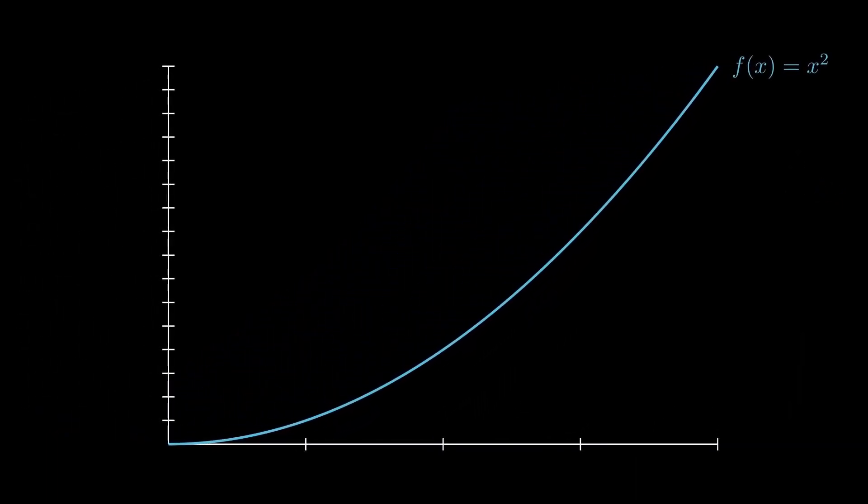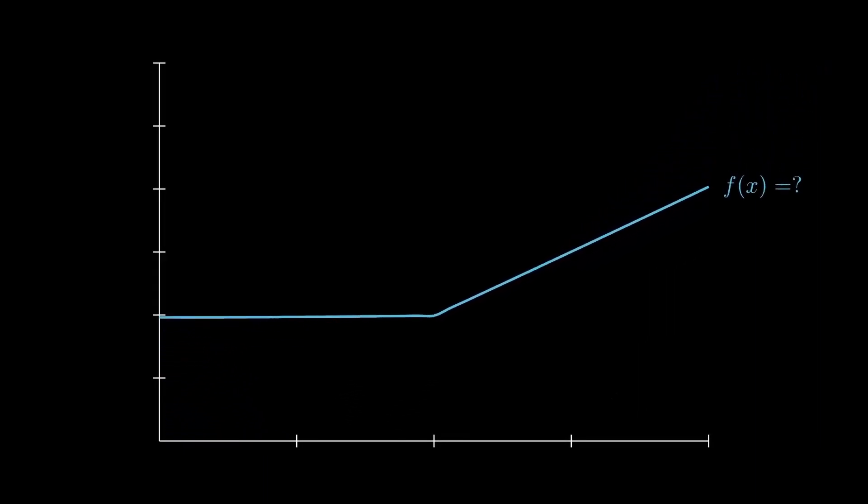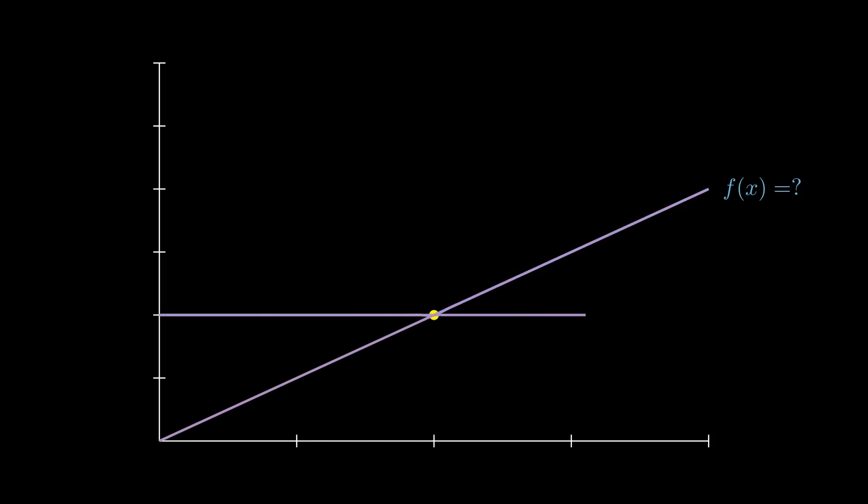In the second example, however, we run into a small issue. For this exact point, we cannot find a single tangent that describes the slope of the function at this point. Therefore, the derivative here actually does not exist.